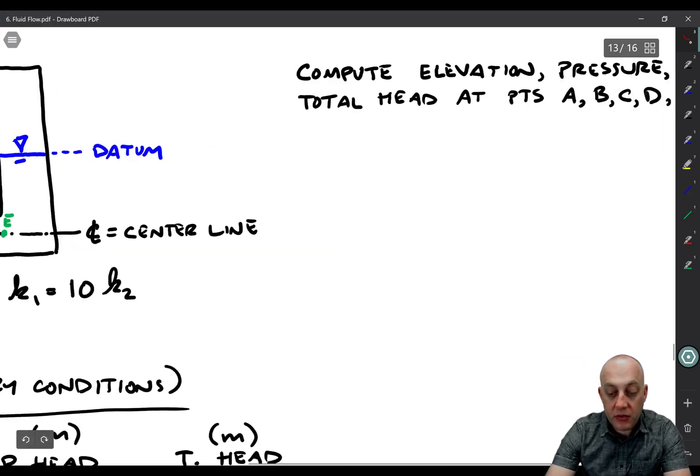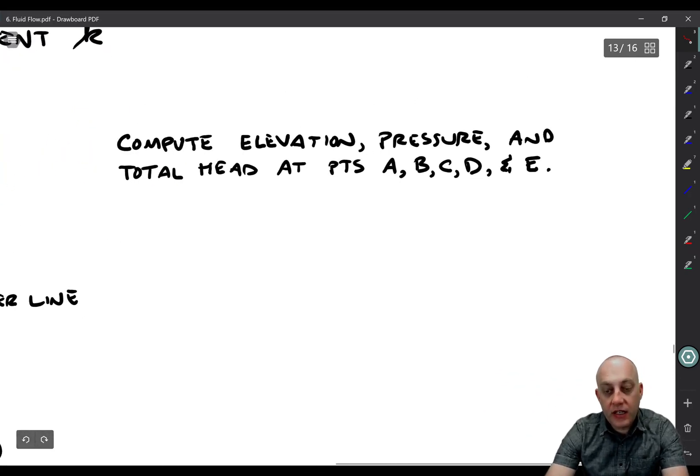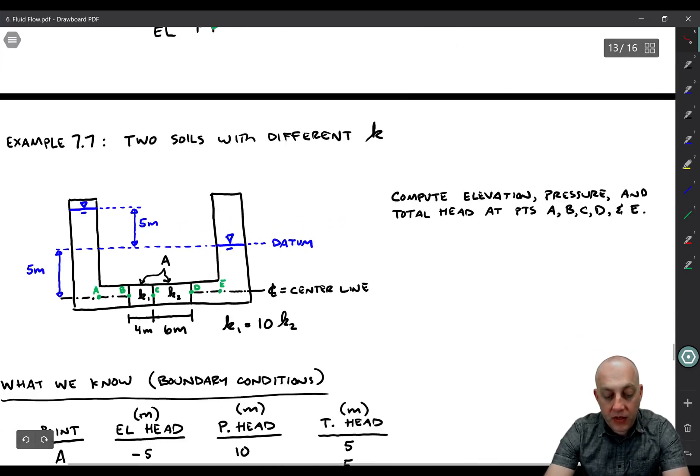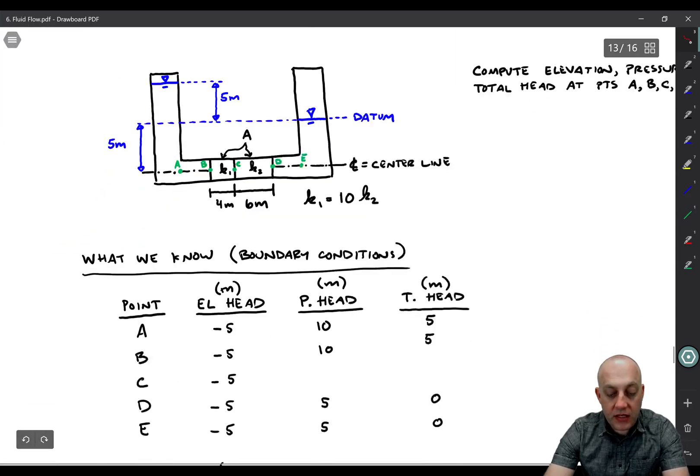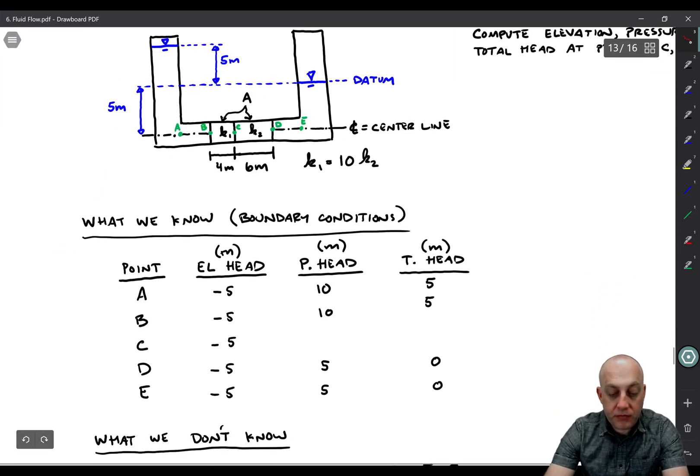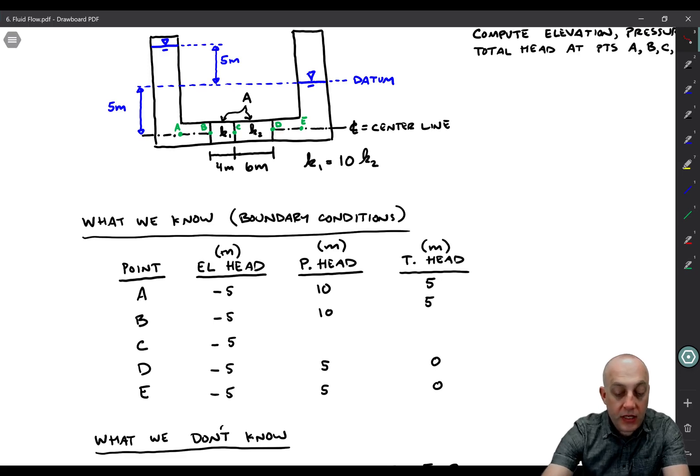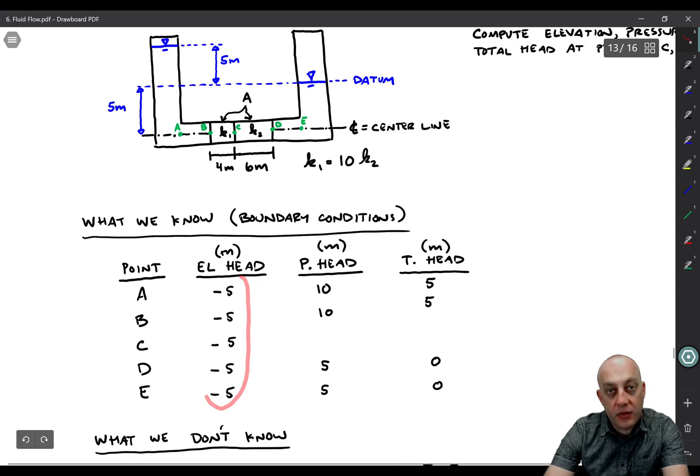Here's the problem statement. Compute elevation, pressure, and total head at A, B, C, D, and E. Now let's make the table showing what we know. We know elevation at all five points, right? Because we've assigned the datum, the elevation head is therefore negative five meters at every single point.